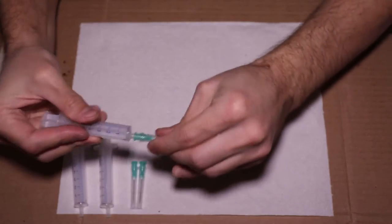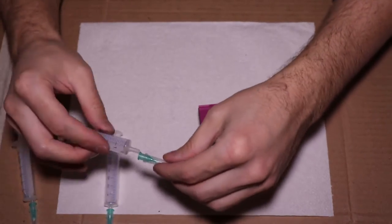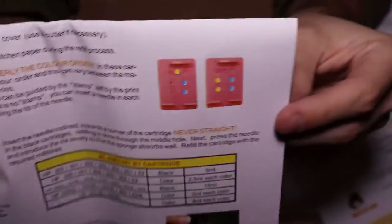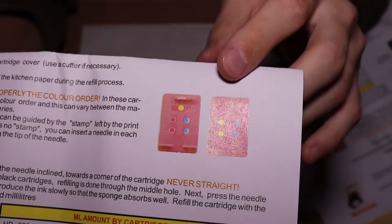Now let's prepare a syringe for each color. And we can see here on the instructions that there are two ways the colors can be injected in the cartridge. And we have this second option.